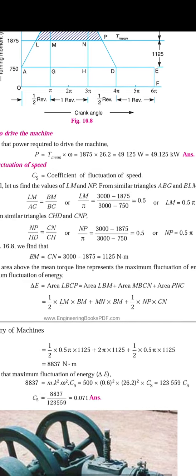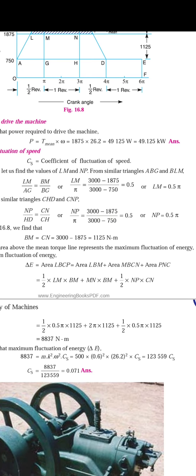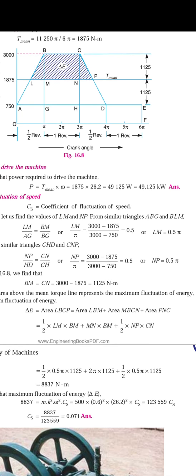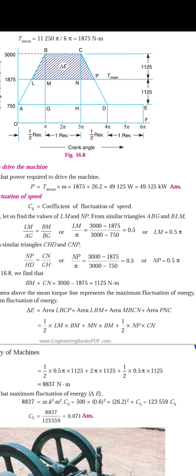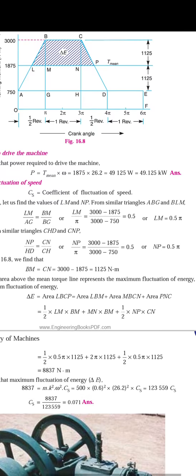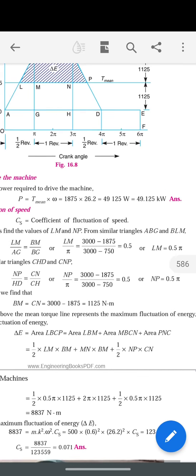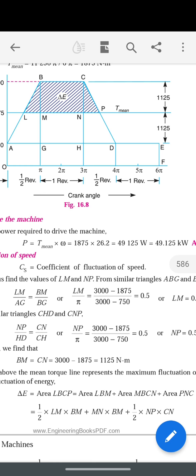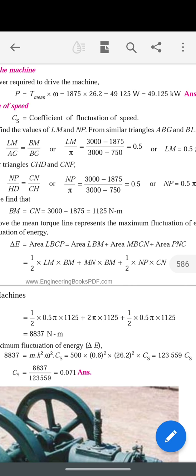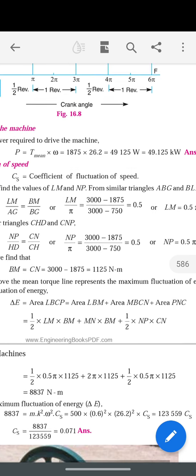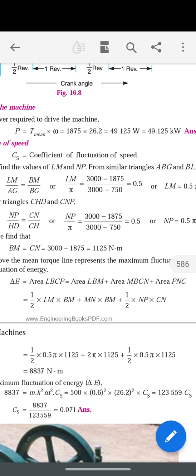Substituting the values: LM = 0.5π and BM = 1125, since total height is 3000 and 3000 − 1150 − 750 = 1125. So the first term is ½ × 0.5π × 1125. MN at the crank angle is 2π, so the rectangle area is 2π × 1125. NP = 0.5π.